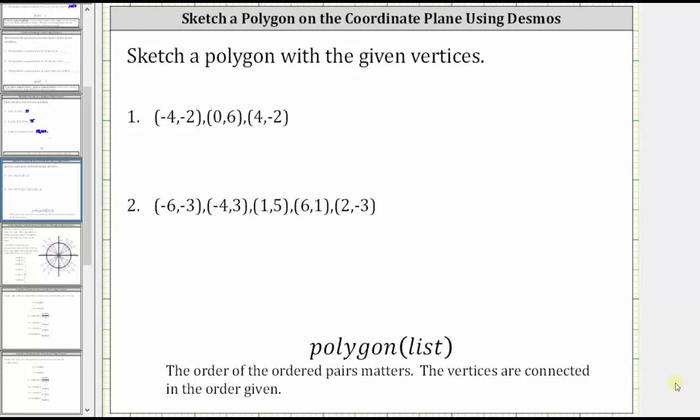This lesson will show how to use Desmos.com to sketch a polygon on the coordinate plane. To do this, we use the polygon function in Desmos, followed by a list that contains the ordered pairs of the vertices. In example number one, we have three vertices, and therefore the polygon will be a triangle.